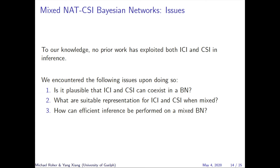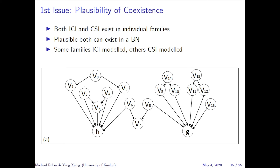To our knowledge, no prior work has considered inference on Bayesian networks that exploit both ICI and CSI. We encountered the following issues: first, is it plausible that ICI and CSI can co-exist in a Bayesian network? Second, what is the suitable representation for ICI and CSI when modeled together? Third, how can efficient inference be performed on a Bayesian network modeled with both ICI and CSI? To address the first issue, since both ICI and CSI occur in individual families, it is plausible that both can exist in the same Bayesian network — some families will be ICI modeled while others will be CSI modeled. For instance, in the BN shown, the H node can be modeled by a CSI model while the G node can be modeled by an ICI model.